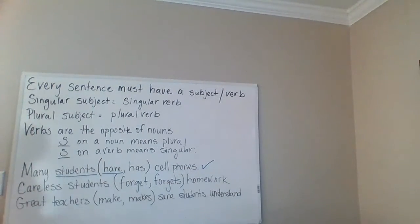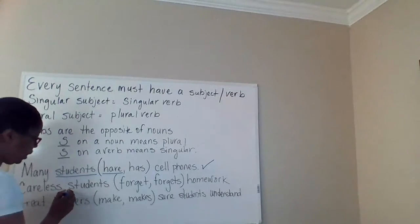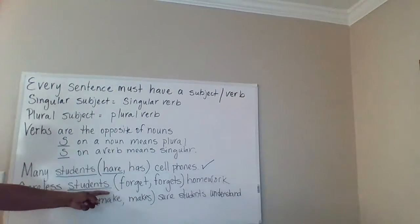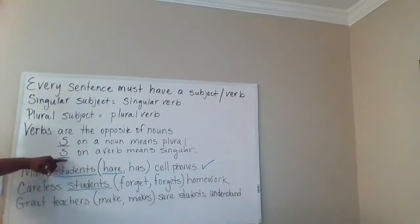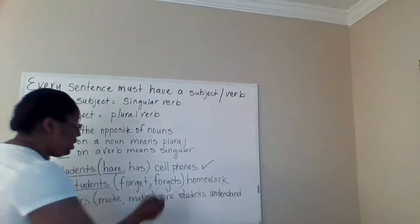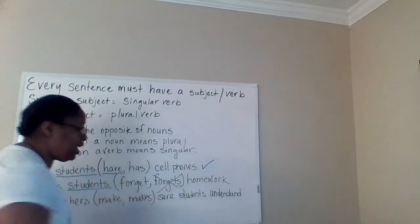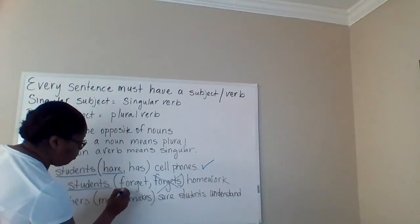Let's go on to the second one: 'Careless students forgets or forget homework.' Again, we have to determine what the subject is — who is the sentence talking about? In this case, it's talking about students again. We see that we have an S on students, so students is plural, and the verb must be plural. An S on a verb means that it's singular, so we can eliminate 'forgets' because the S on it makes it singular. So students and the verb would be 'forget.'